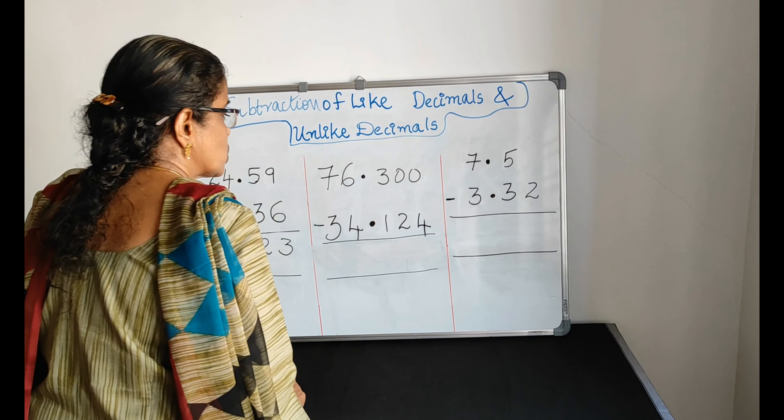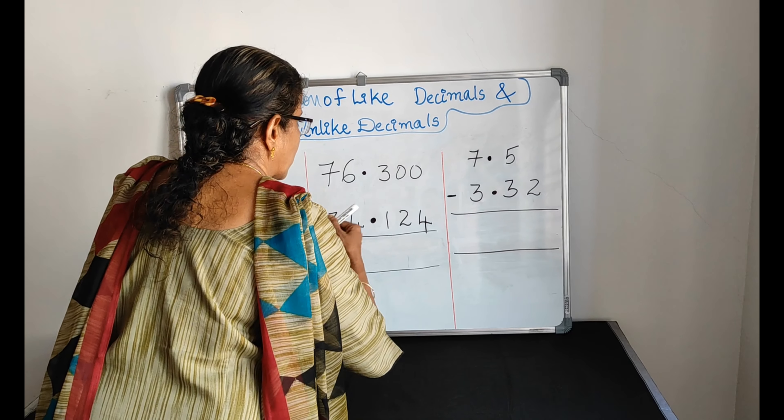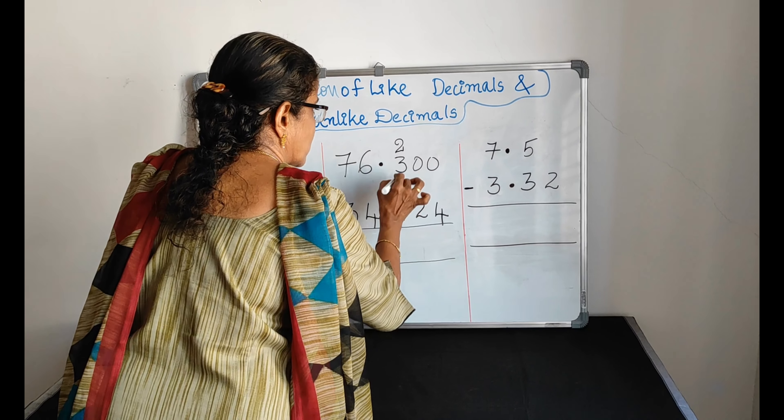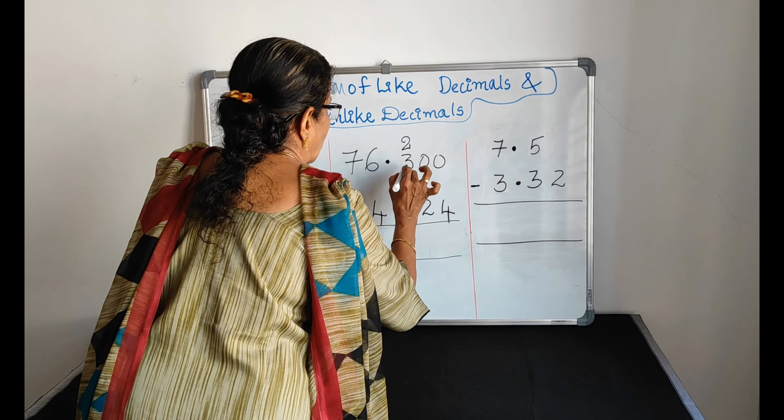Beginning itself, you have to make it like by adding zeros like this. While adding zeros like this, the value does not change.